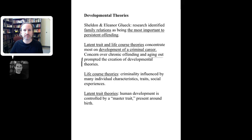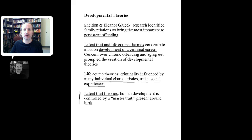The two different theoretical branches: first, the life course theories. This is the idea that a person's criminality is going to be influenced by individual characteristics, traits, and their social experiences over the life course. Latent trait theories, on the other hand — the idea here is that human development is controlled by some type of master trait, present around birth, that then influences this person throughout his or her life.